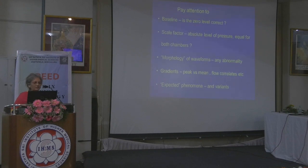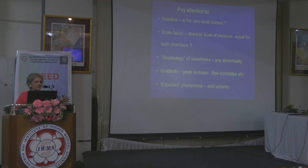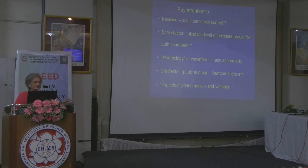The zero level has to be perfect when you measure the gradients, and also the pressures inside the chambers — particularly in low pressure chambers like the right atrium and left atrium — the zero has to be perfect, otherwise it can lead to a lot of error. Always look at the scale when you interpret the trace — whether the scale is applicable to both chambers being recorded or if they are on different scales. You should know the basic morphology of the waveforms and the various types of gradients measured, like the peak gradient, mean gradient, and their flow correlates.